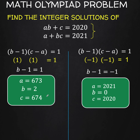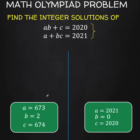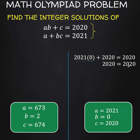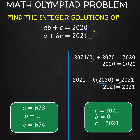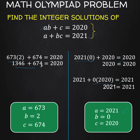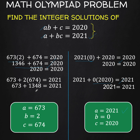Let's verify by substituting these values back into the original equations. For the first solution set, A equals 2021, B equals 0, C equals 2020: in the first equation the AB term is 0, leaving 2020 equals 2020, which is correct. In the second equation, the BC term is 0, leaving 2021 equals 2021, which is correct. For the second solution set, A equals 673, B equals 2, C equals 674: in the first equation 2 times 673 is 1346, plus 674 equals 2020, which is correct. Substituting into the second equation also gives 2021 equals 2021, which is correct.